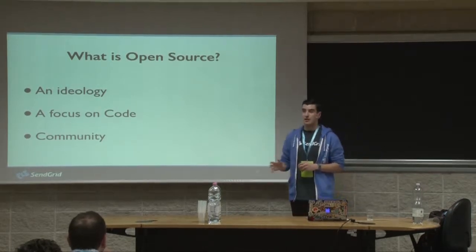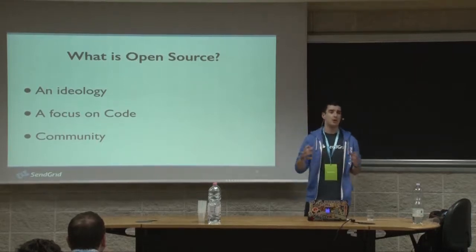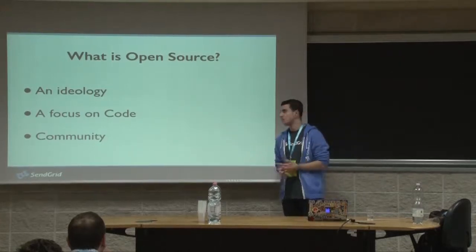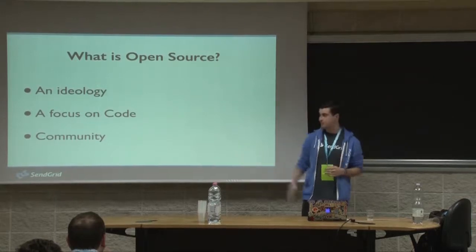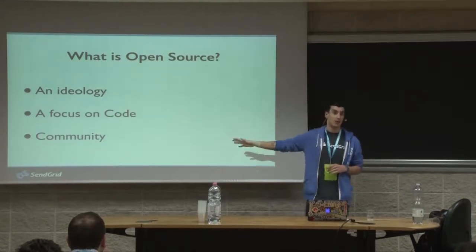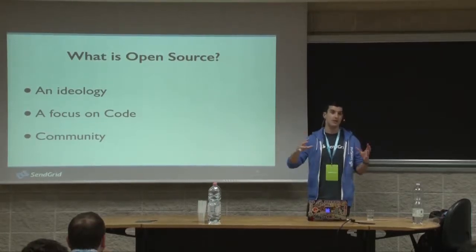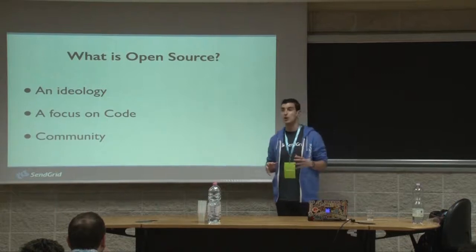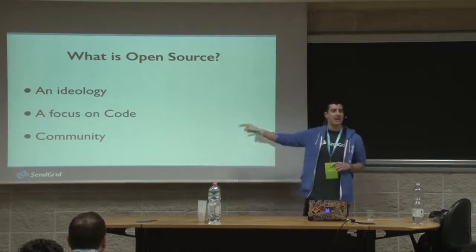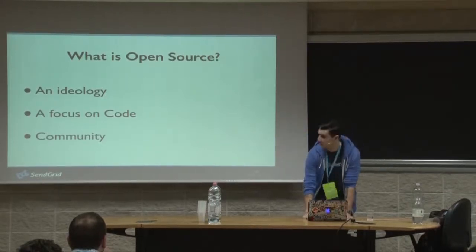For me, it's an ideology. Secondly, it's a focus on code. With tools like GitHub and Bitbucket, open source is very much about the source code of our software — that's what we're open sourcing. And the most important one, the one I think is biggest, is community. Open source is about a community of engineers, software developers, hackers — whatever we want to call ourselves — around a piece of software. Community is super, super mega important.